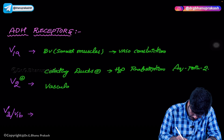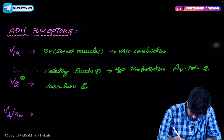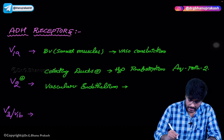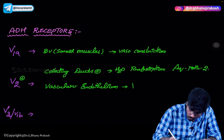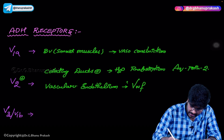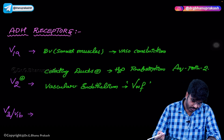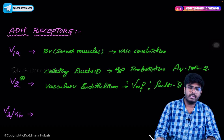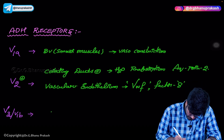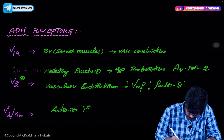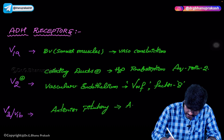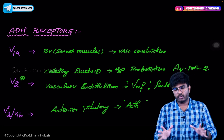V2 receptors are also present on the vascular endothelium. When these are stimulated, the vascular endothelium releases von Willebrand factor and also helps in the release of Factor VIII. Third, V3 (or V1b) receptors are present in the anterior pituitary. When V3 receptors are stimulated, they help in the production of ACTH, which in turn helps in the production of cortisol.